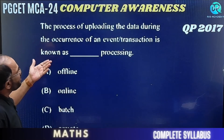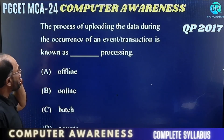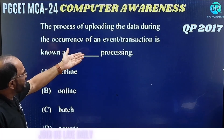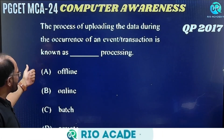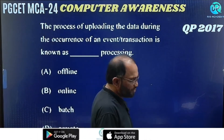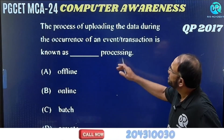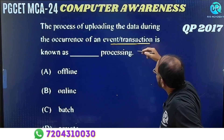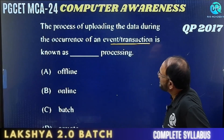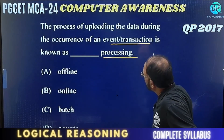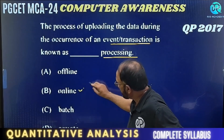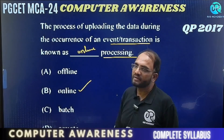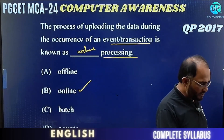The process of uploading data during the occurrence of event transactions is known as — how do you upload this data when an event transaction is going on? It is through online processing. The right answer is online processing.